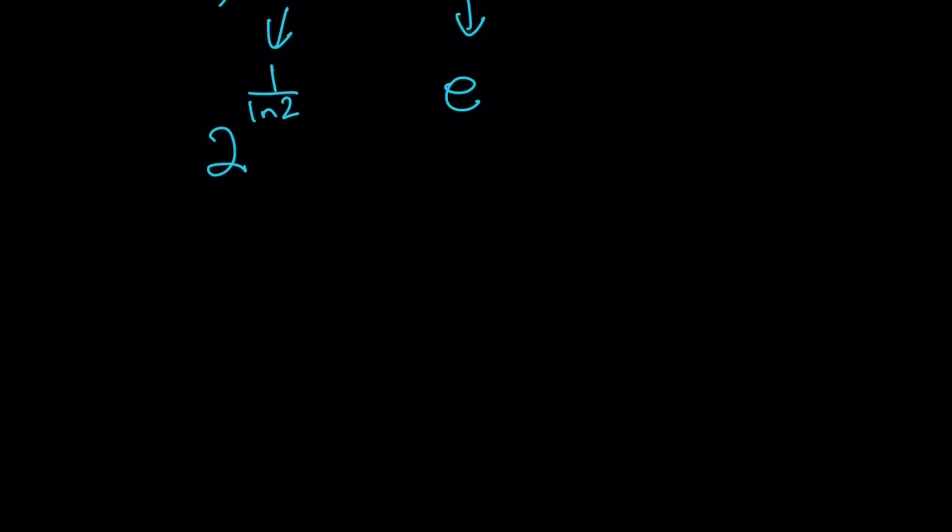Well, here's one thing you can do. You can call this 2 to the power 1 over ln 2. You can call that z, and then you can just ln both sides, and if you ln both sides, ln 2 to the power 1 over ln 2 is equal to ln z.